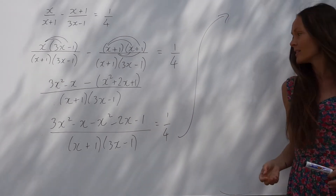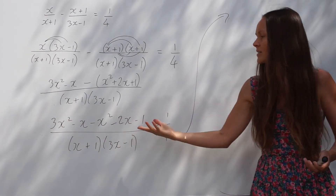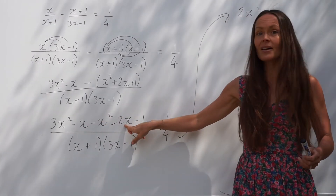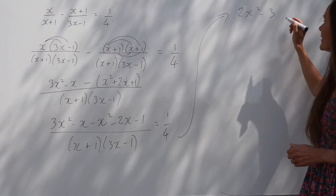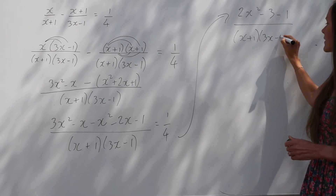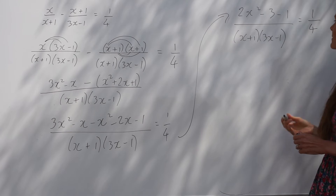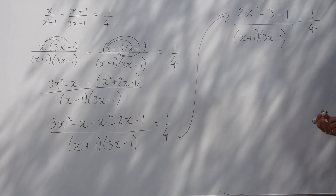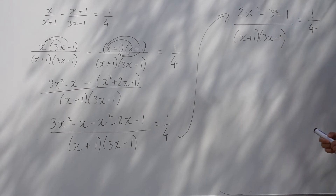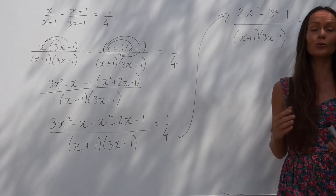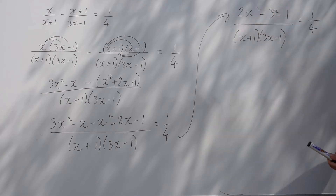Now simplifying: 3x squared take away x squared is 2x squared. Looking at the x terms, negative x take away another 2x is negative 3x, and the negative 1 stays the same. Always good to show all your working out — if you make a small mistake and get the final answer wrong, you still pick up marks for your working.